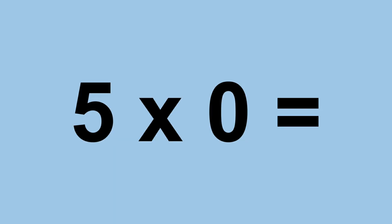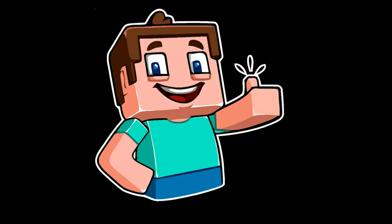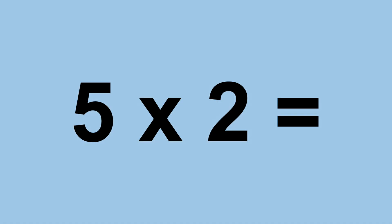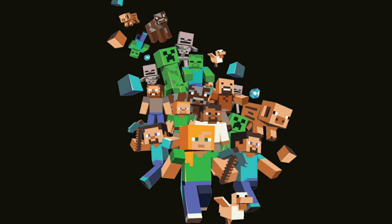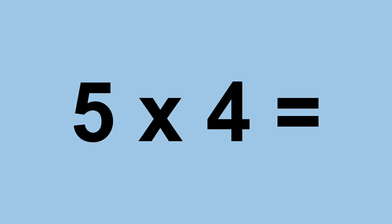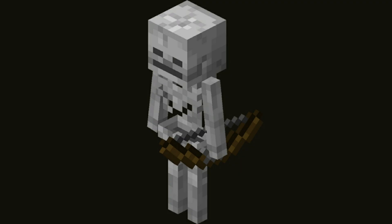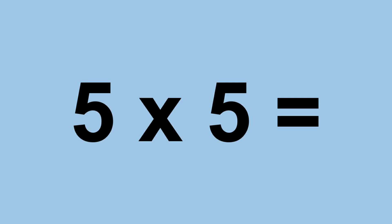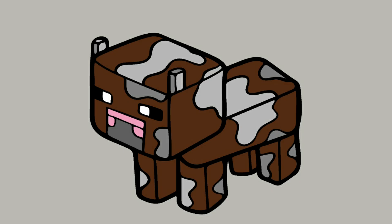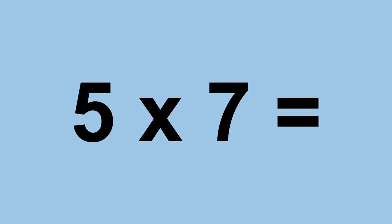5 times 0 equals 0. 5 times 1 equals 5. 5 times 2 equals 10. 5 times 3 equals 15. 5 times 4 equals 20. 5 times 5 equals 25. 5 times 6 equals 30. 5 times 7 equals 35.